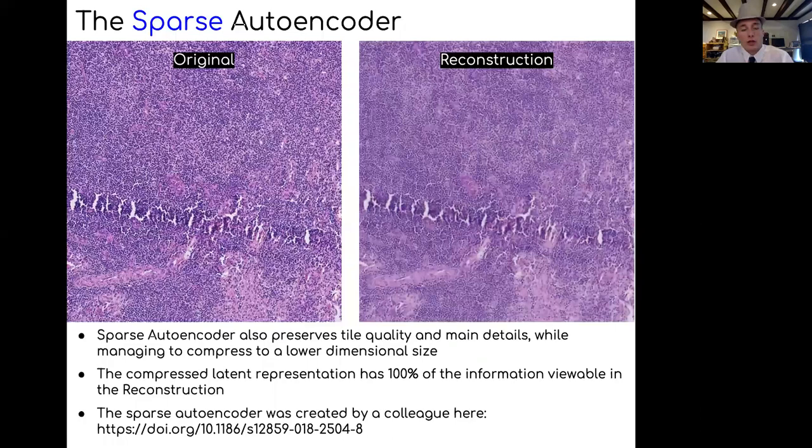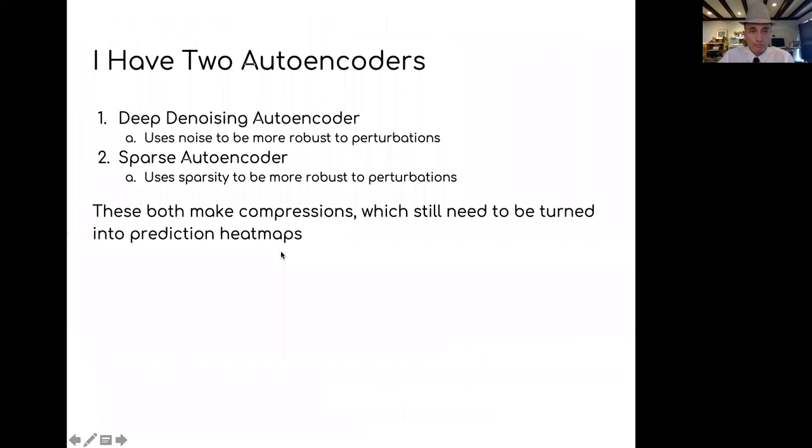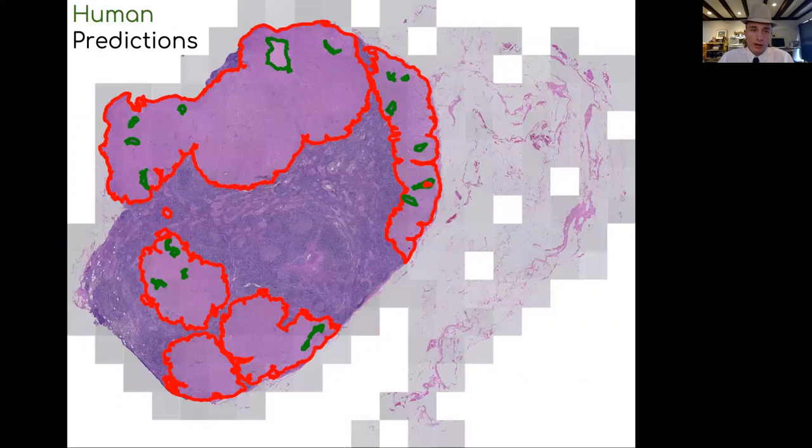Here's a similar output from the sparse autoencoder. I put in this image and I got a very nice reconstruction. A lot of the details are really well preserved in that output. Now I have two autoencoders and I want to make cancer heat map predictions from these compressions.